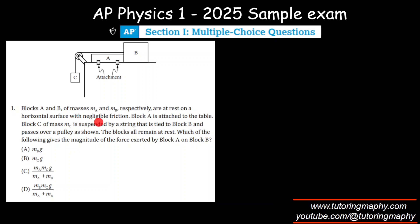It rests on a horizontal surface with negligible friction. Let's go to here. Block A is attached to the table. Okay, I see. This is the block A that is being attached to the table by these attachments.